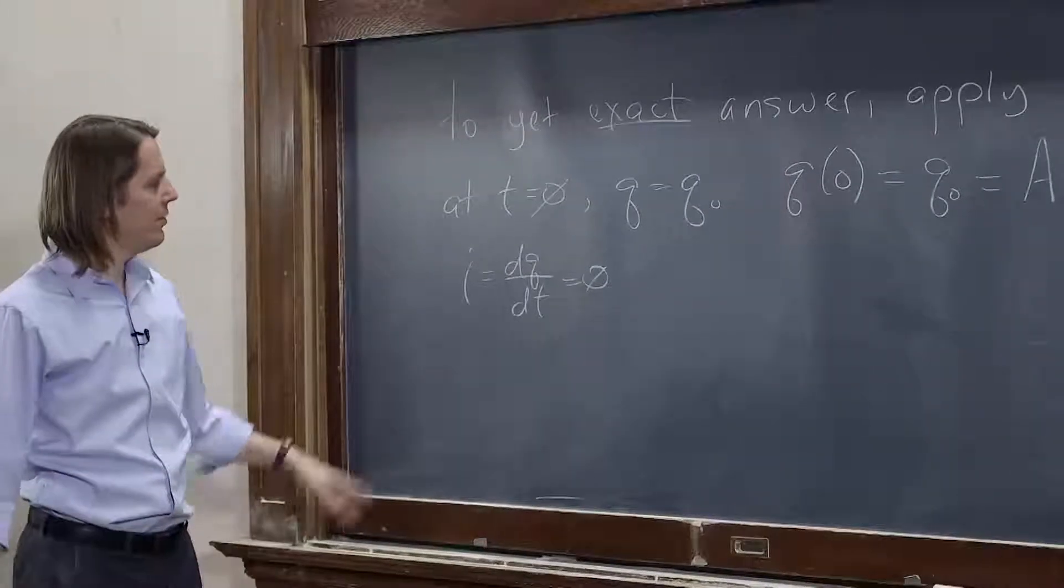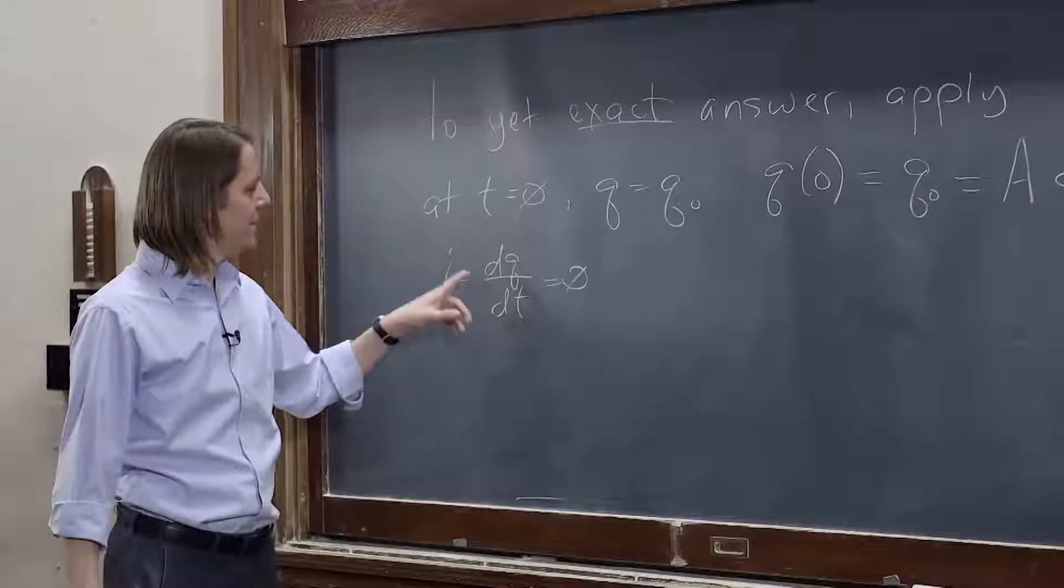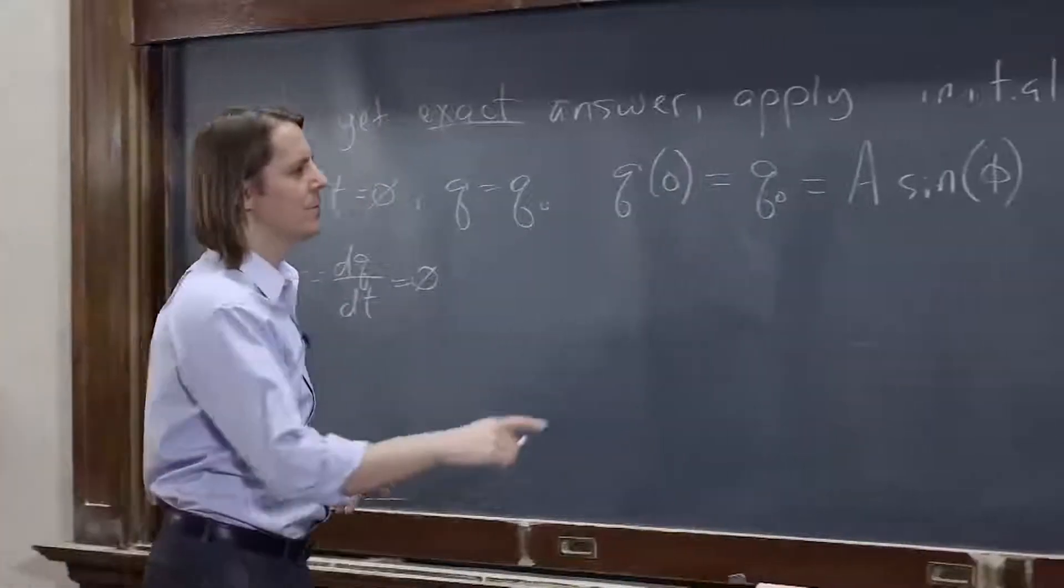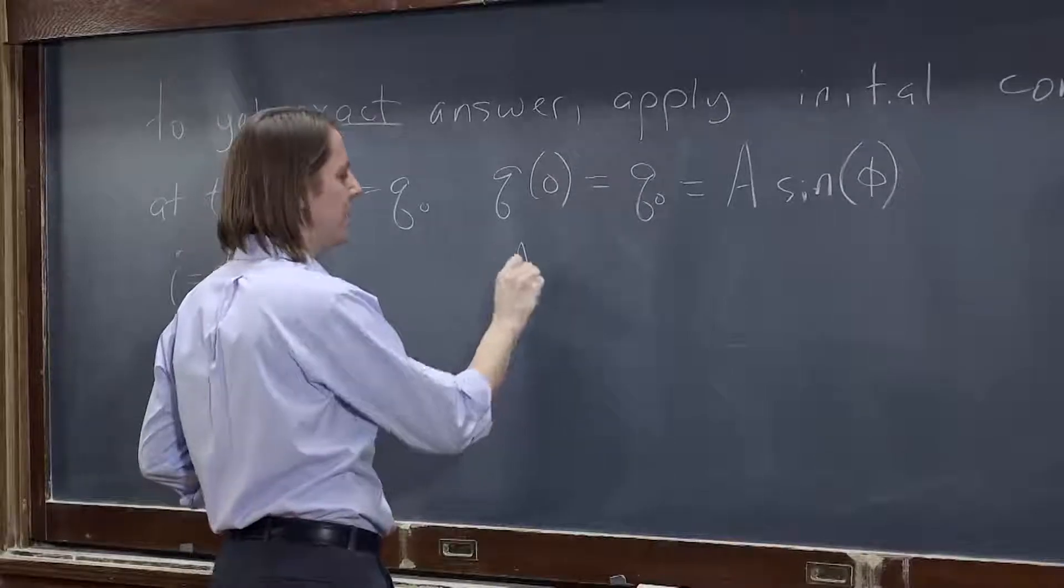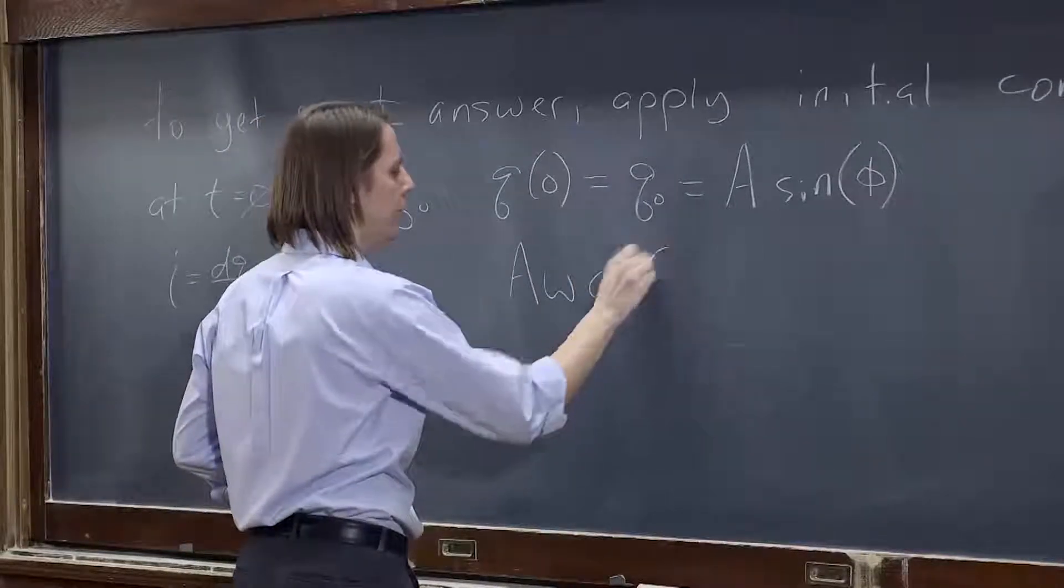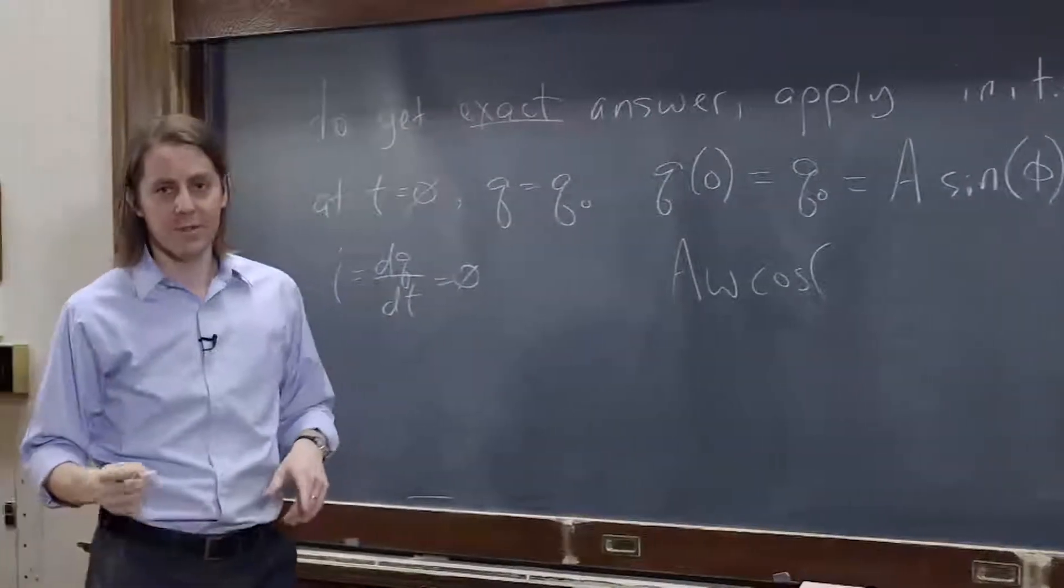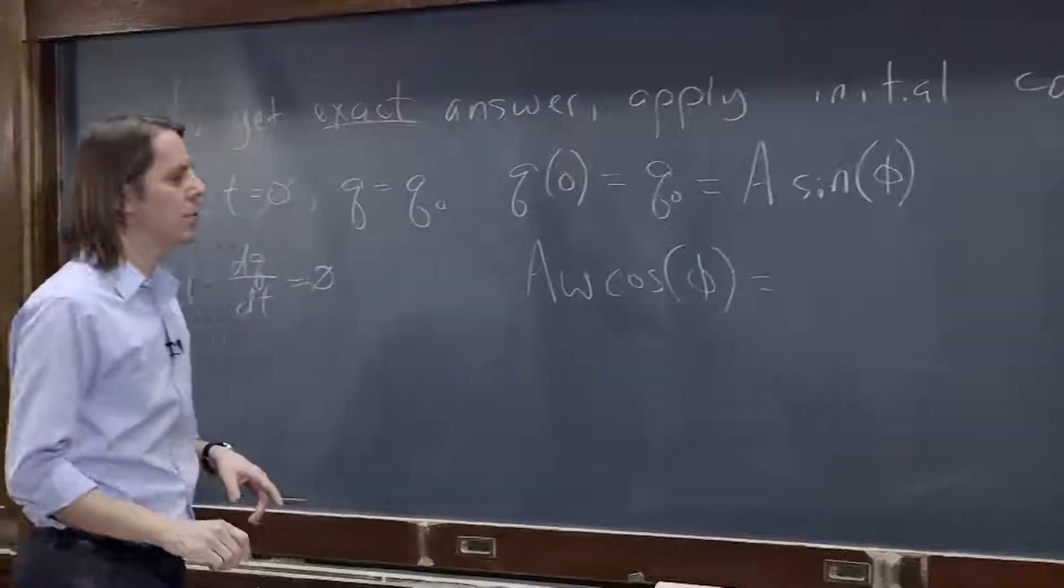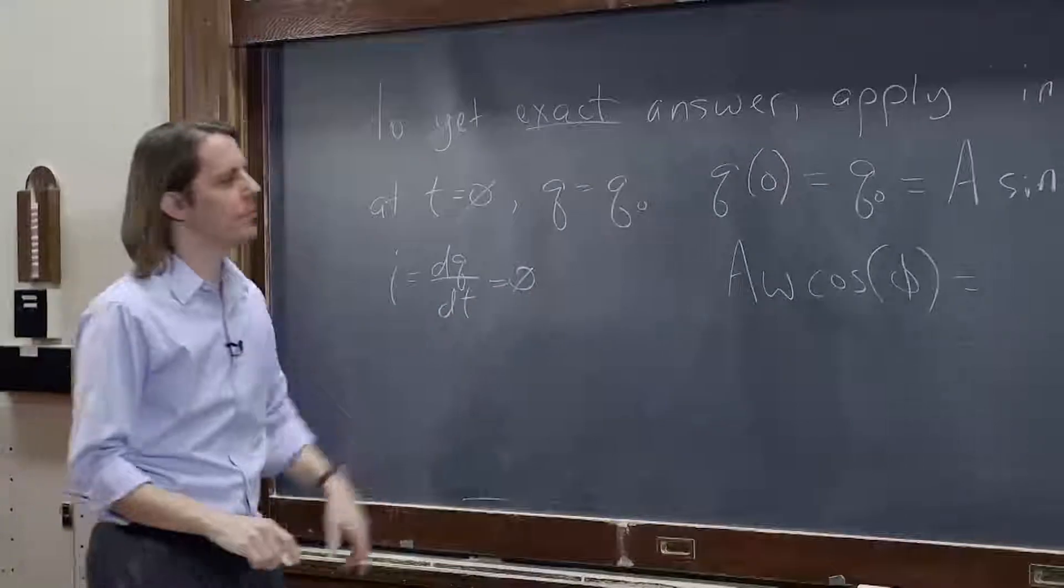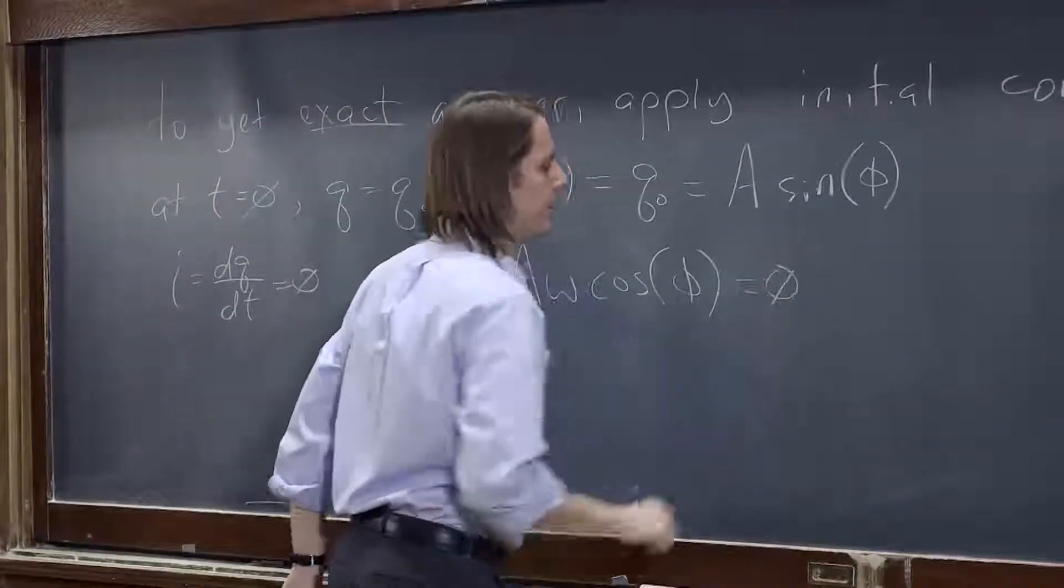And now let's plug in for this guess. This is dq dt at time zero. So that would be derivative of sine is cosine. That would be a omega cosine. Omega t is zero. So cosine phi equals zero. Right? Equals zero. Okay.